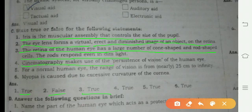Cinematography makes use of the persistence of vision of the human eye. Yes, this is also true. For a normal human eye, the range of vision is from nearly 25 cm to infinity. Yes, this is also true. Myopia is caused due to excessive curvature of the cornea. This is also true.